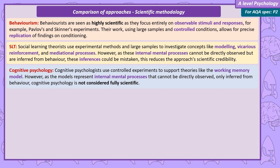Cognitive psychologists attempt to validate their theoretical models, such as the working memory model, using highly controlled laboratory experiments. However, as those models represent internal mental processes that can't be directly observed — only inferred from behaviour — cognitive psychology is not considered fully scientific.